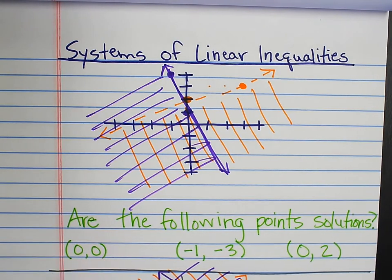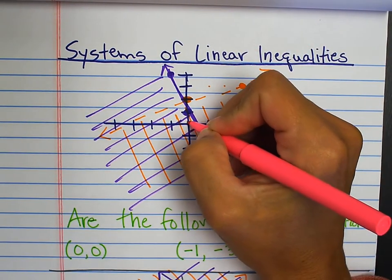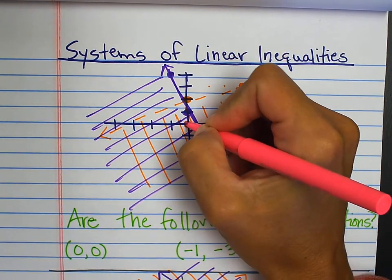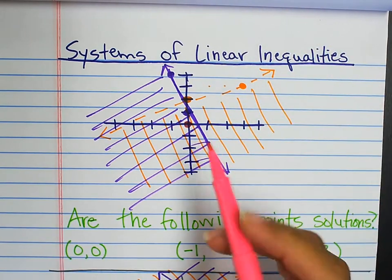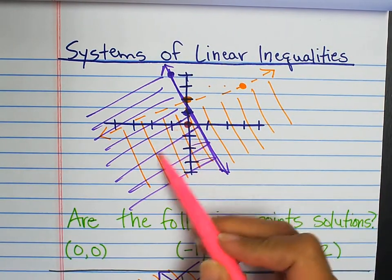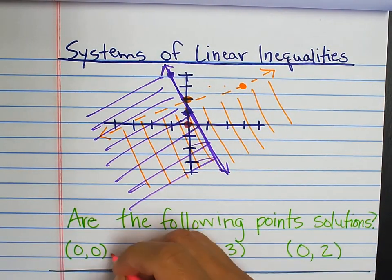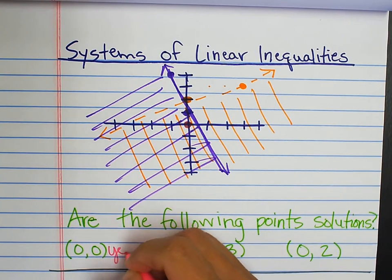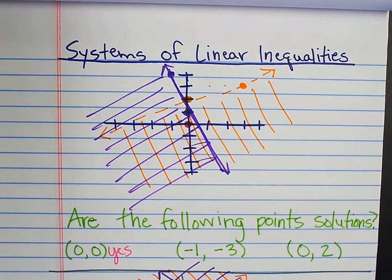The point zero, zero — that is the origin. That is right here. We can see that it is in the purple and the orange shading. So, zero, zero is a solution. Yes, that is a solution.